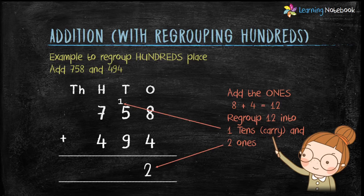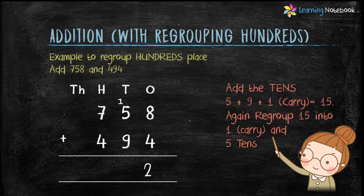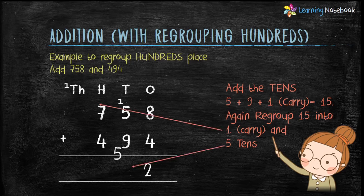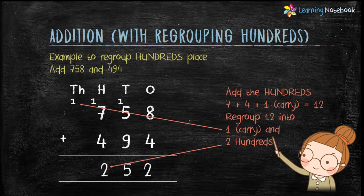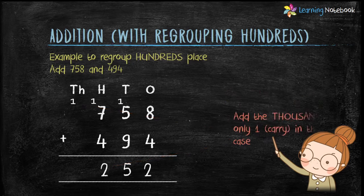Add the digits at the tens place: 5 plus 9 plus 1 equals 15. Regroup 15 into 1 carry and 5 tens. Moving to the hundreds place: 7 plus 4 plus 1 equals 12. Regroup 12 into 1 carry and 2 hundreds. The 1 acts as a carry to the thousands place, and since there are no other thousands digits, we write 1. So our answer is 1252.